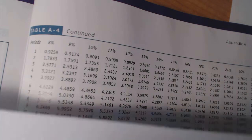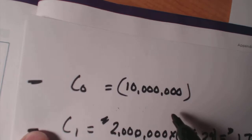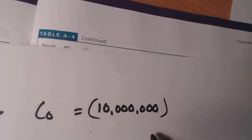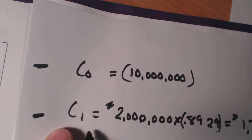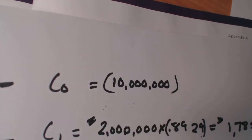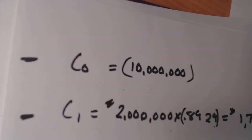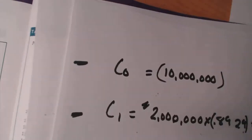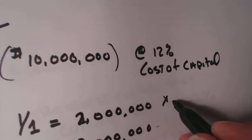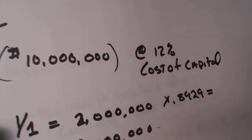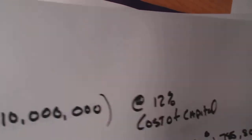We know our assumption is that we are going to put out ten million dollars. In year one, C1, we are going to make two million dollars in profit. Like we did with the NPV calculation, we take our two million dollars in profit from year one and multiply that by 0.8929. Doing so gives us one million seven hundred eighty-five thousand eight hundred dollars.